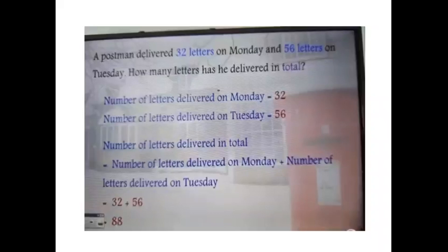Now see the units side. Smaller number 2, bigger number 6 in mind. After 6, plus 2 is 8. We write 8. Now see the tens side: 3 fingers, 5 in mind. After 5: 6, 7, 8. So 32 plus 56 is 88.